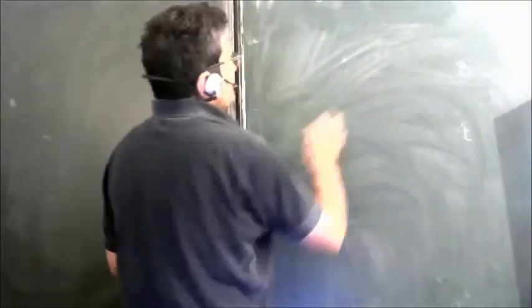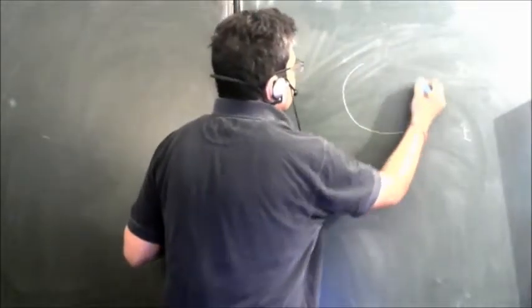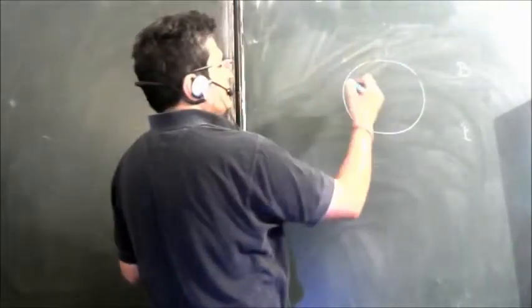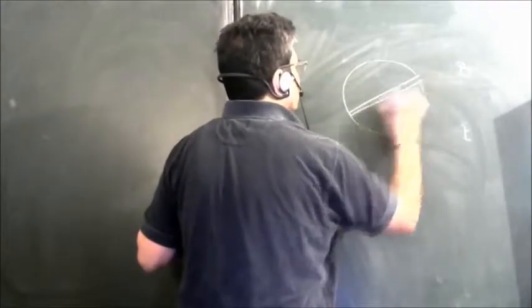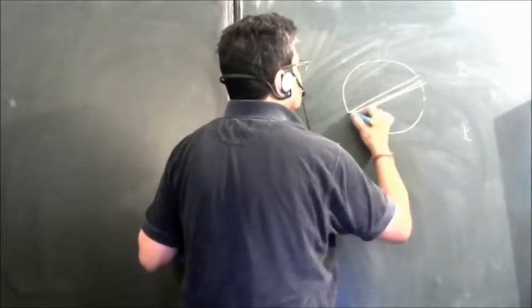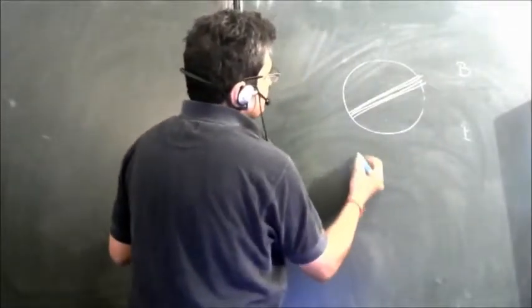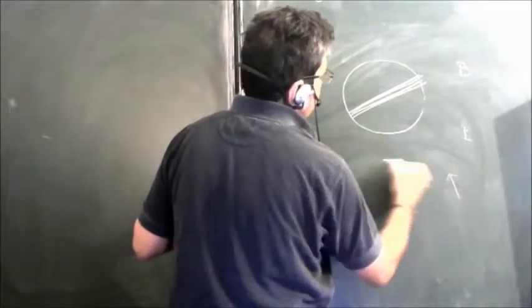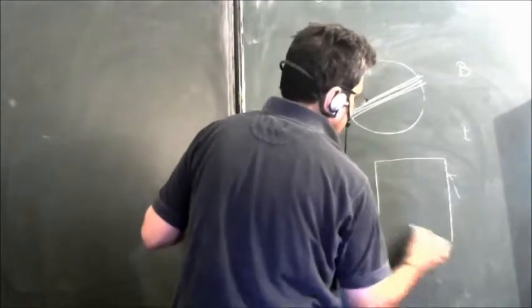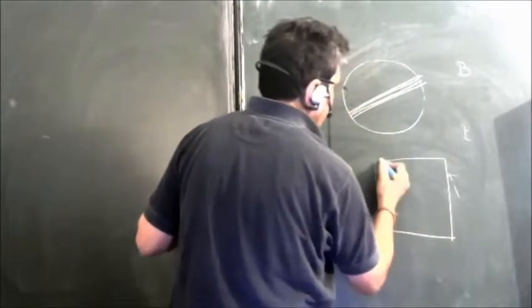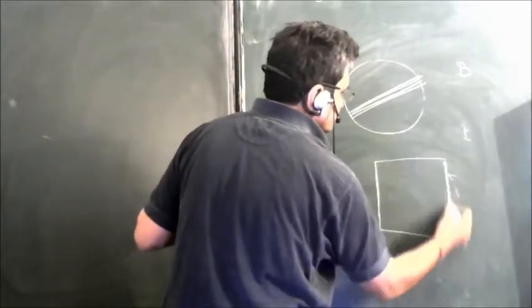Let this be the core on which - this is the top view - and let this be the coil. If I take the side view from here, you will see the coil like this. This is the coil, this is the side view.